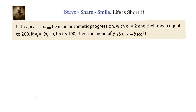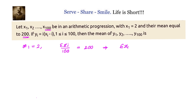We have been given that x1, x2 up to x100 are in an arithmetic progression. The first term is given as 2. We know that mean equals sum divided by number of observations, so sigma xi divided by 100 equals 200. That gives us sigma xi equals 200 into 100, which is 20,000.